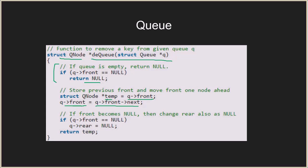We keep the current front in temp. There is also a check: if front becomes null after the update, it means the queue is now empty, so we also set rear to null to keep it consistent. Finally, we return temp, which is the node we just dequeued.